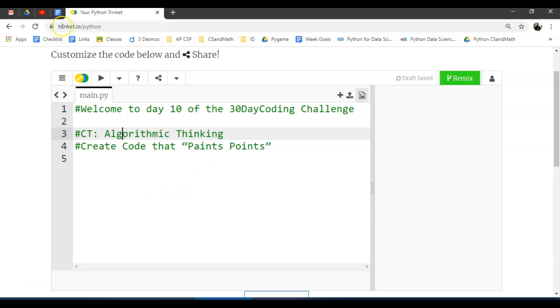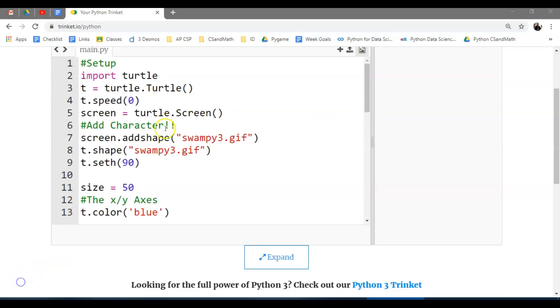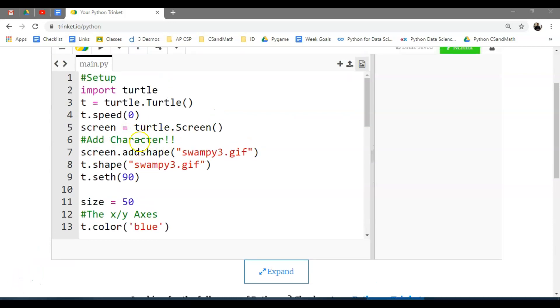I'm going to take the code from yesterday, paste it in here from challenge nine and we'll get started. Just to refresh your memory from challenge nine, we added in a character. I also forgot to talk about pixelation, so some of you might have found that your image was too big. You either have to resize that image so it's like 30-50 pixels, something fairly small, otherwise it ends up taking over the screen.